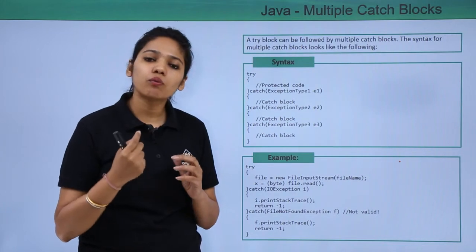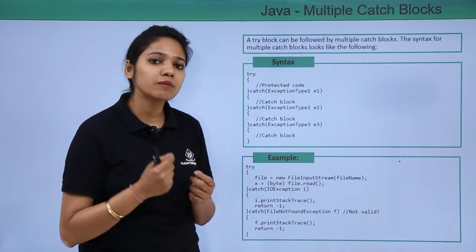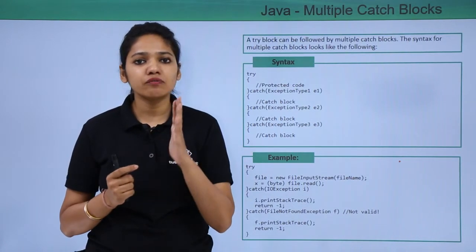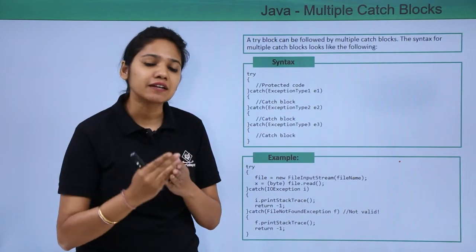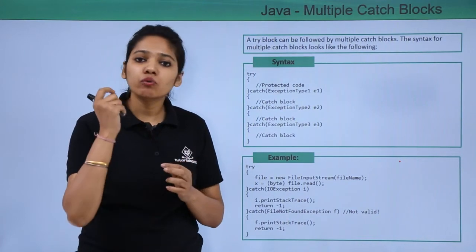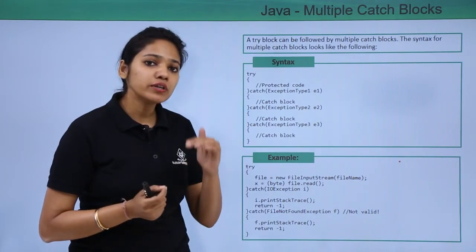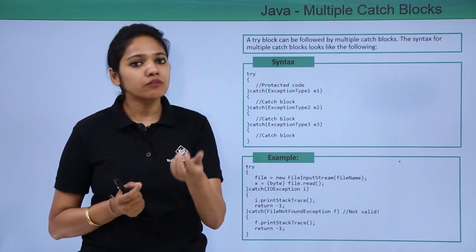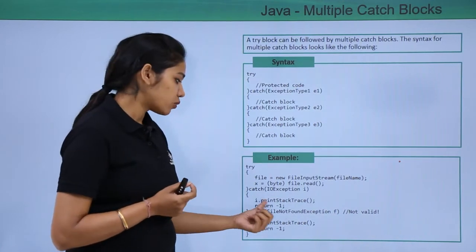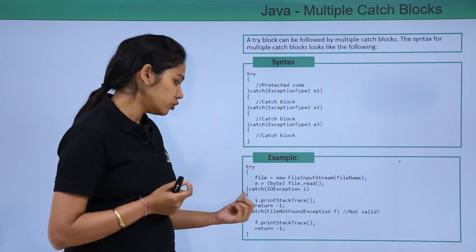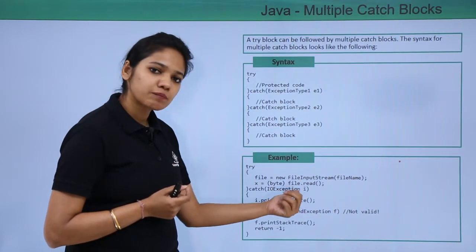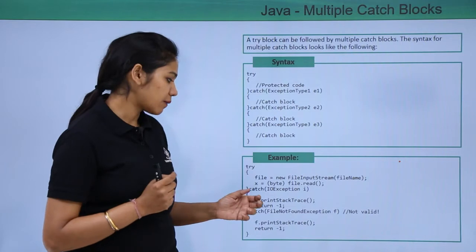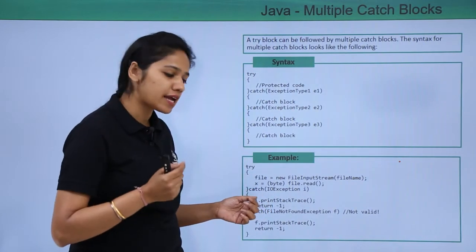We use e.printStackTrace() to print the exception details. Till now, to print what kind of exception occurred, we were using System.out.println(), which displays the exception type but does not print other details such as which line the error occurred on or the state of the program. All that additional information is stored in a stack. Using printStackTrace() on the exception object will display the exception type, message, and where it occurred.